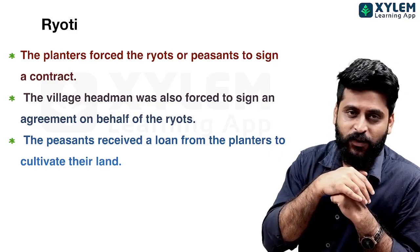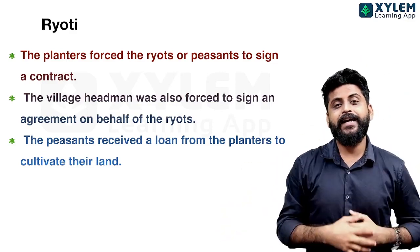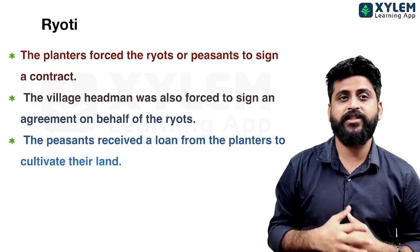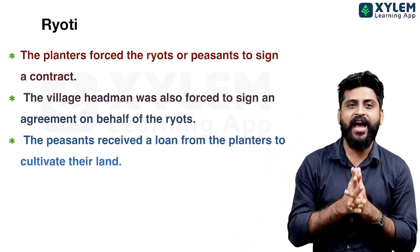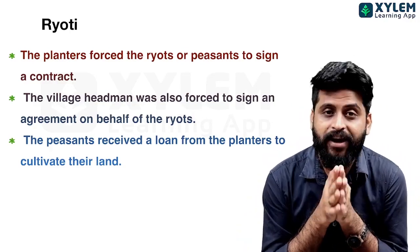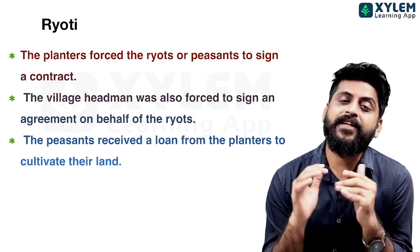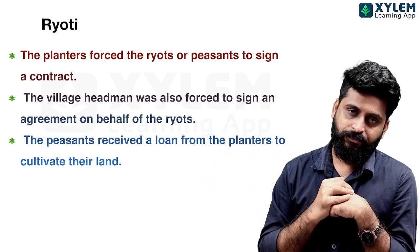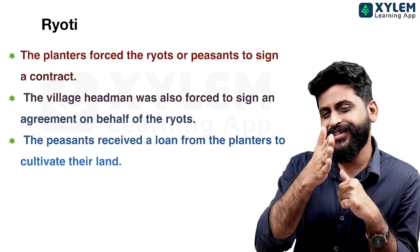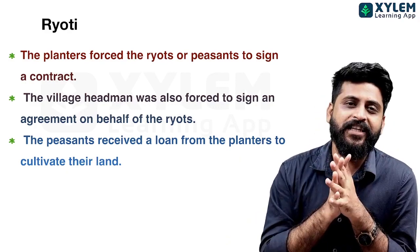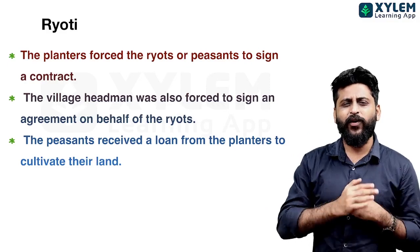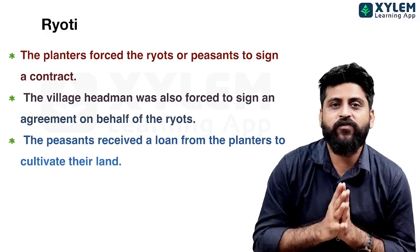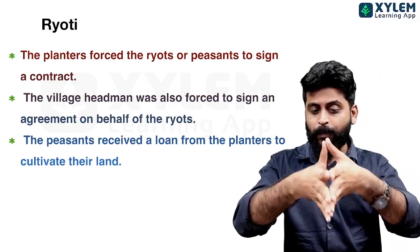The village headman was also forced to sign an agreement on behalf of the peasants. The third point is that the peasants received a loan from the planters to cultivate their land.